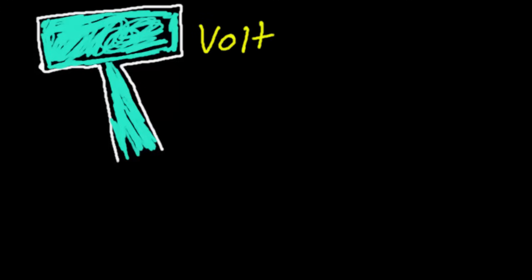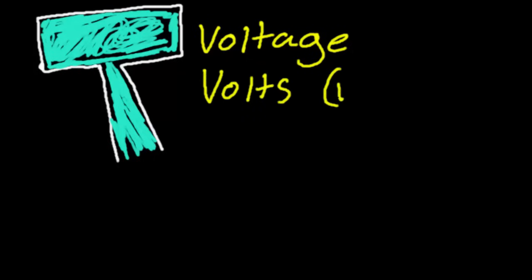Now there is something very similar to water pressure when we talk about electricity, and it is called voltage. Voltage is measured in something called volts, and when we're looking at equations, voltage will generally be the letter V. So voltage, if we look at our water system, is simply water pressure — the pressure of the electrons flowing through the wire. And it's essentially determined by the battery we can think of, so voltage in this case is determined by our water tank. It's the pressure of the electrons flowing through a wire — that's what voltage is.